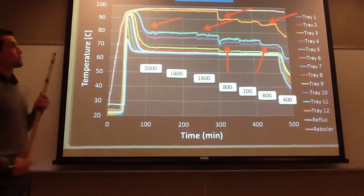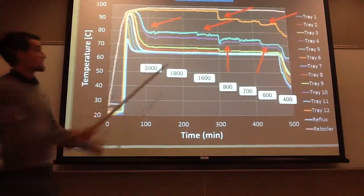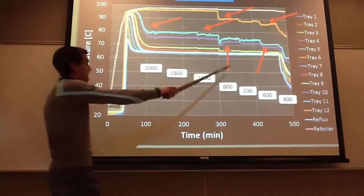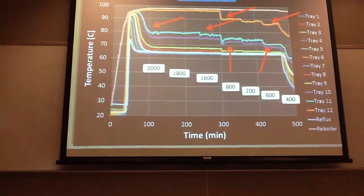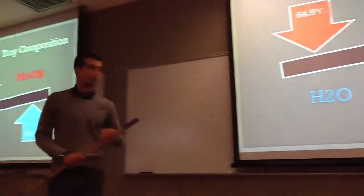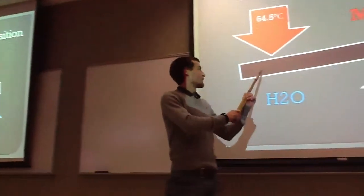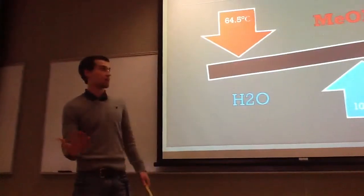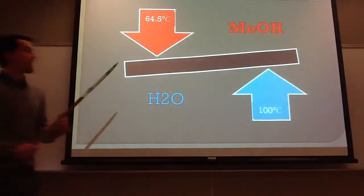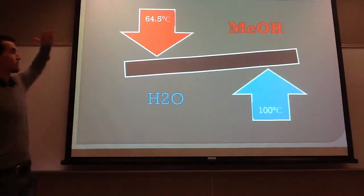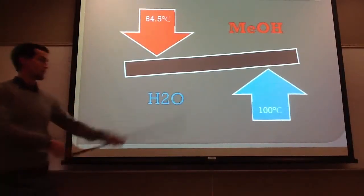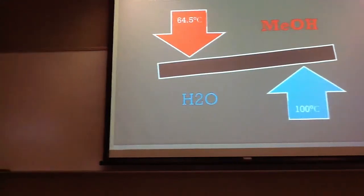This is part three — the tray temperature phenomena. You can see random temperature drops here. This is tray 12, tray 11, 10, 9, 8, and so forth. The temperature change is based on the composition on each tray. In a column, the lighter component goes up — but this graph shows temperature, not direction. If you have a higher composition of methanol on your tray, your temperature will be closer to methanol's boiling point and lower. If you have more water, which boils at 100°C, your tray temperature will be much higher.